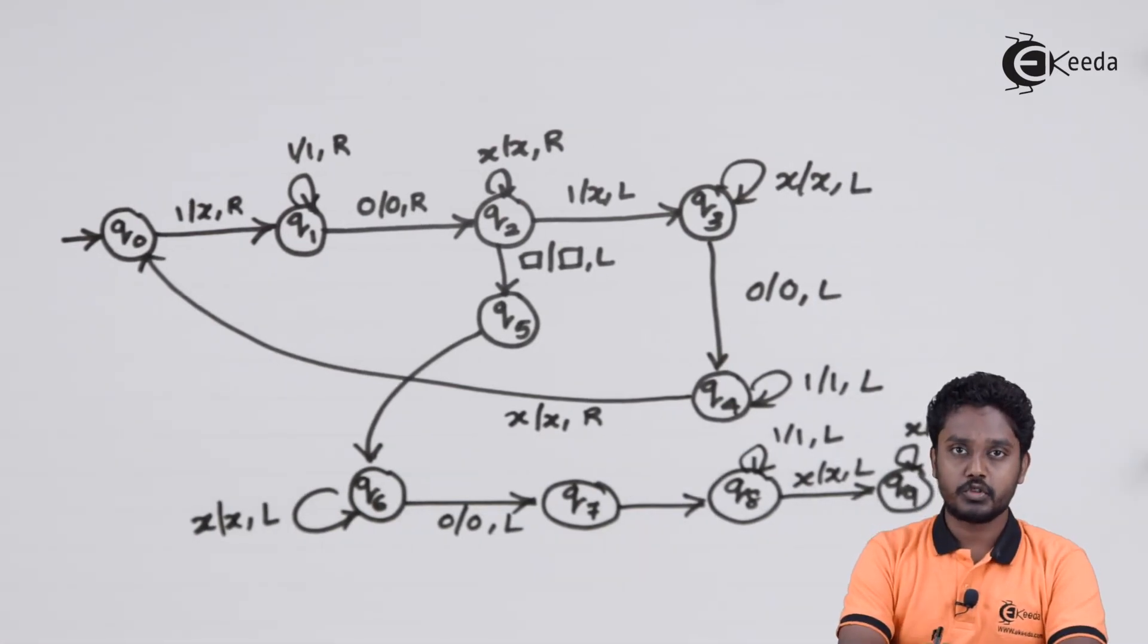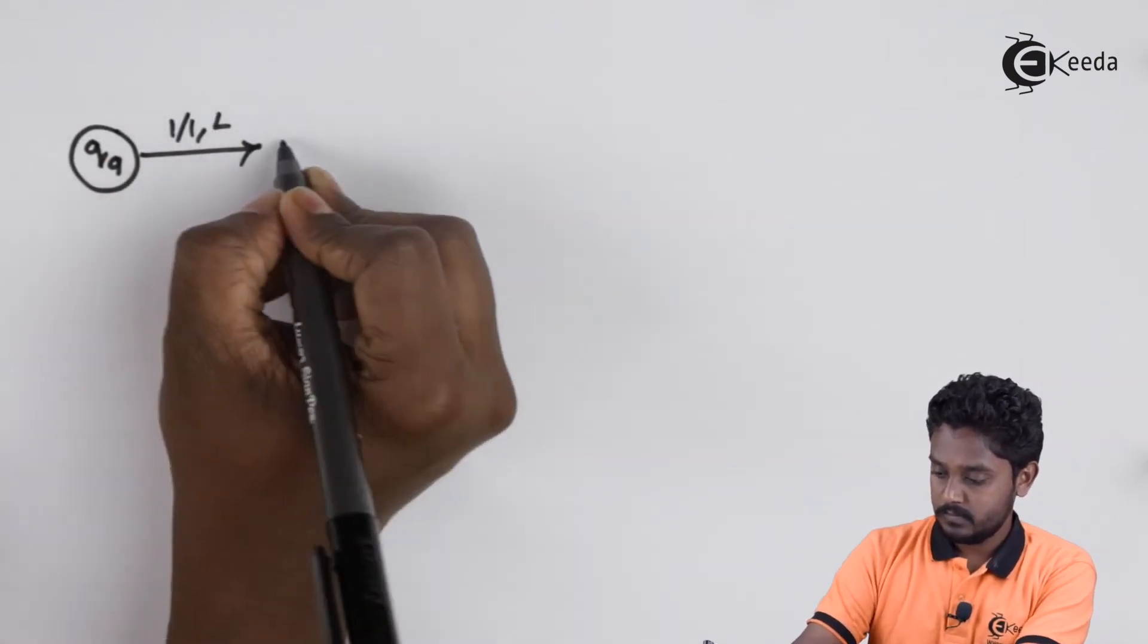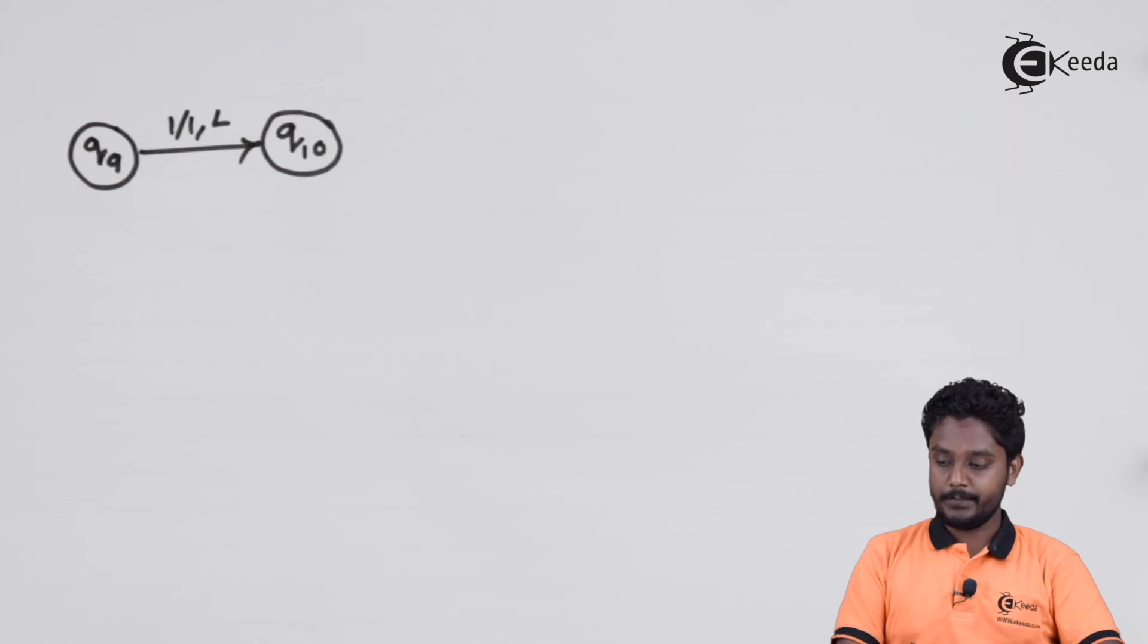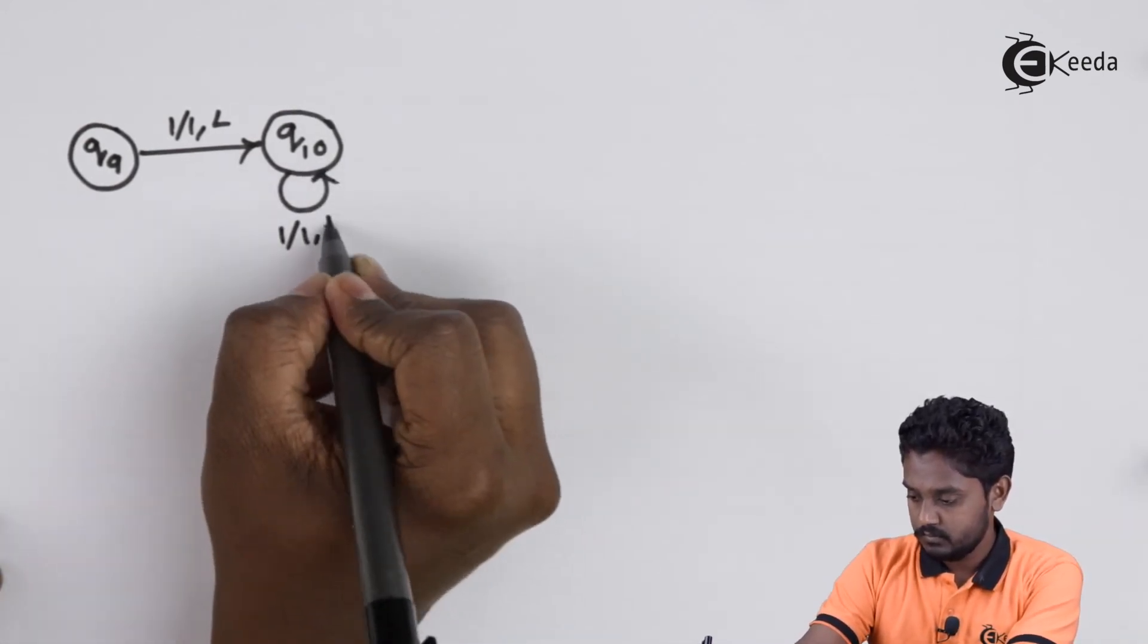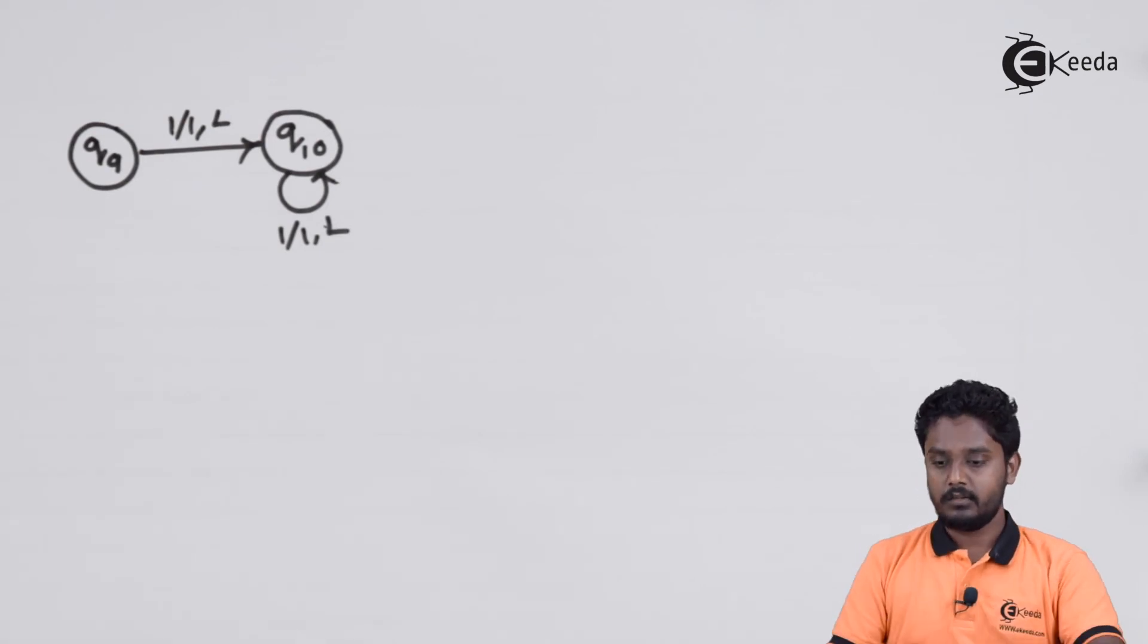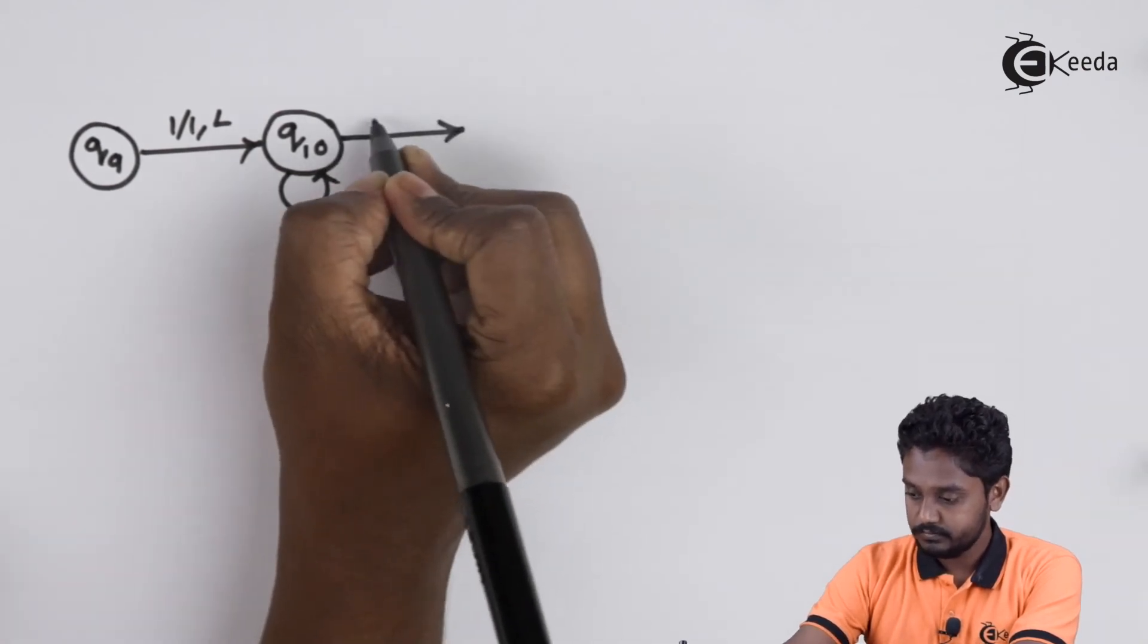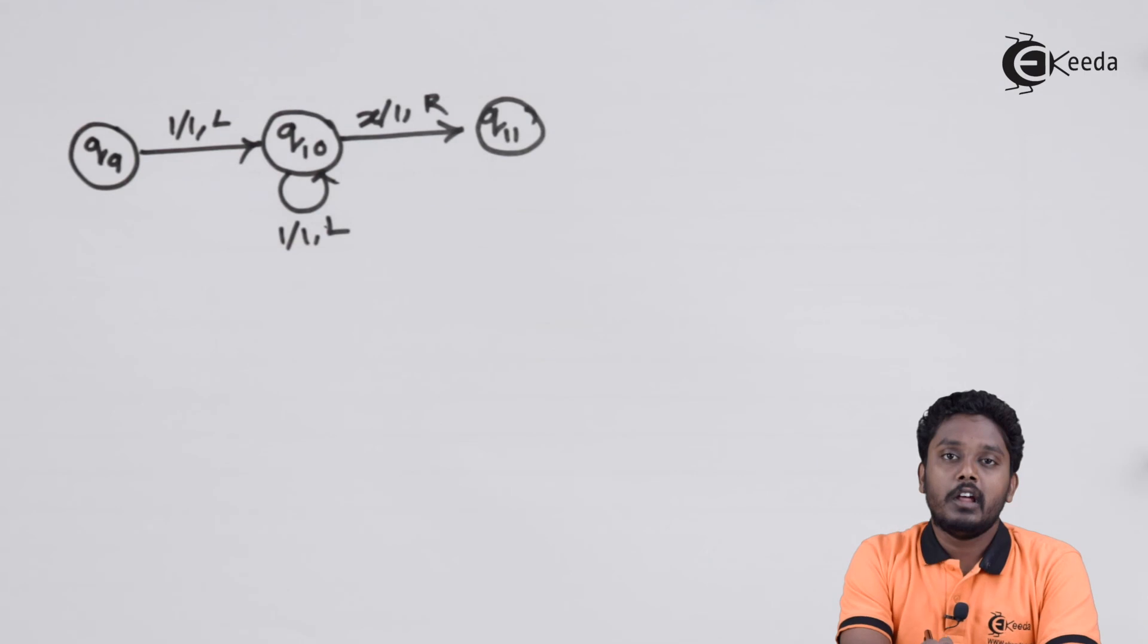I am making the transition in a new sheet. Now, whenever we see the first x, we need to replace that x with 1. Now we included one more 1 onto the string. Now, the number of 1's in the tape represents x minus y.